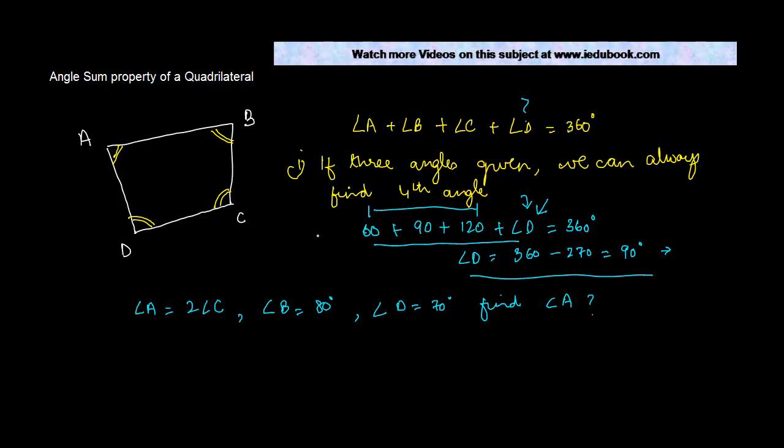If you look at this particular case, you have angle B equal to 80 degrees, angle D equal to 70 degrees. We know that the sum of all these four angles is equal to 360 degrees. So let's say angle C is equal to x degrees, then angle A is two times angle C, so it will become 2x degrees.